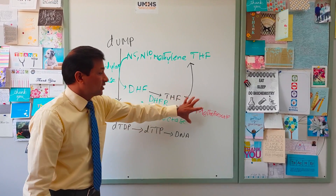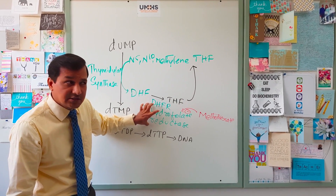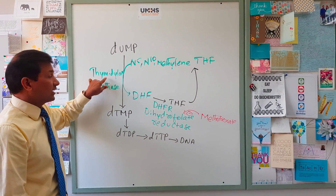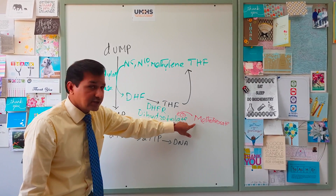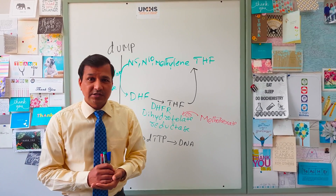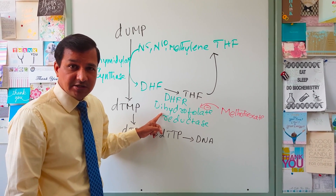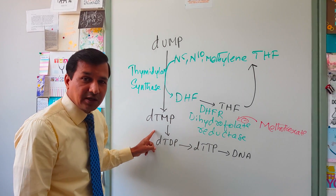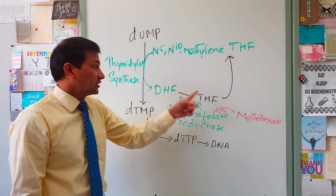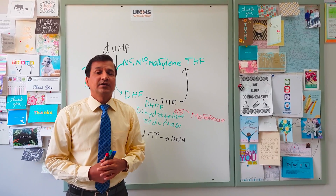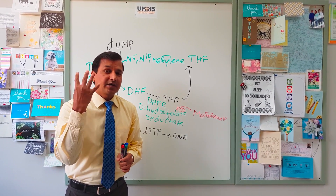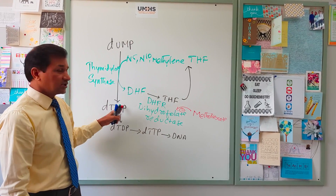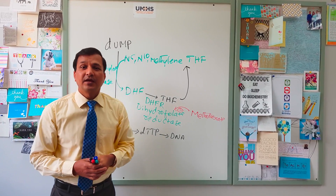For exam purposes, methotrexate can be asked in four ways: First, which enzyme is directly inhibited — dihydrofolate reductase. Second, which coenzyme is decreased — N5,N10-methylene tetrahydrofolate. Third, which reaction is affected — conversion of dUMP into dTMP. Fourth, which enzyme is indirectly inhibited by methotrexate — thymidylate synthase.